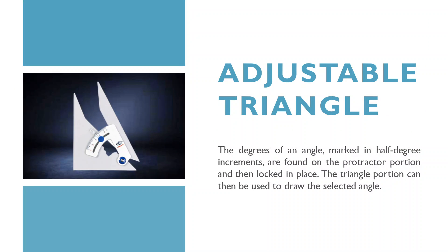The adjustable triangle combines the functions of protractors and drafting triangles. Adjustable triangles can be set and locked at any angle. The degree markings, in half-degree increments, are found on the protractor portion and then locked in place. The triangle portion can be used to draw the selected angle.